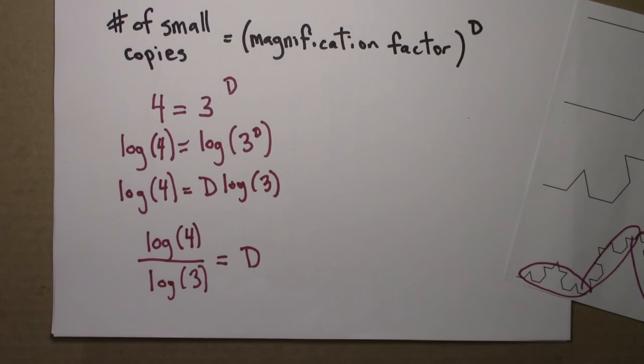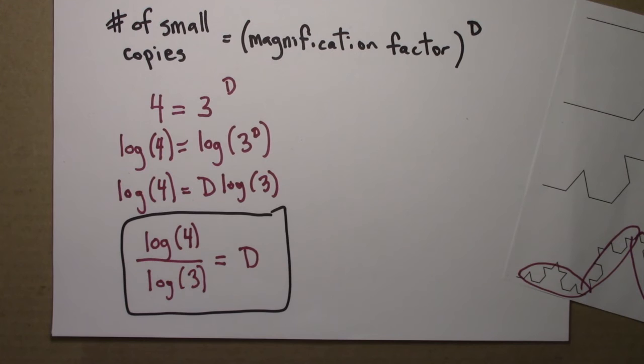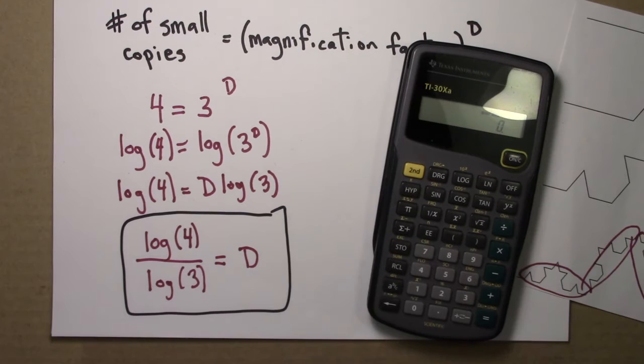So there's our answer. The self-similarity dimension D is log four over log three.